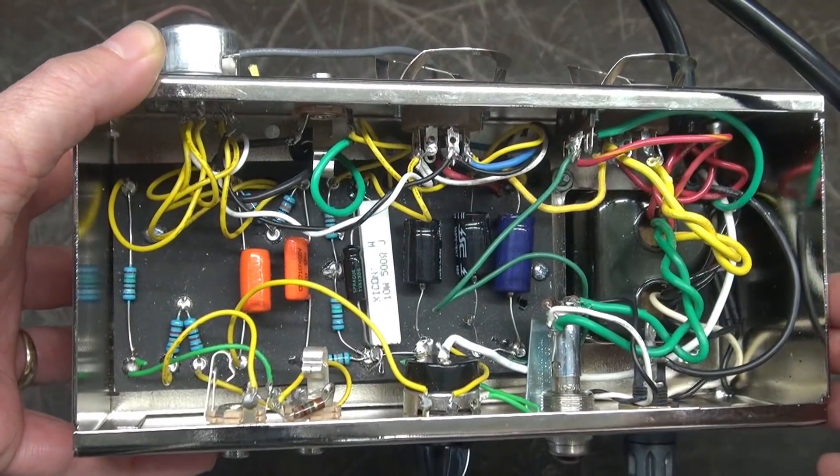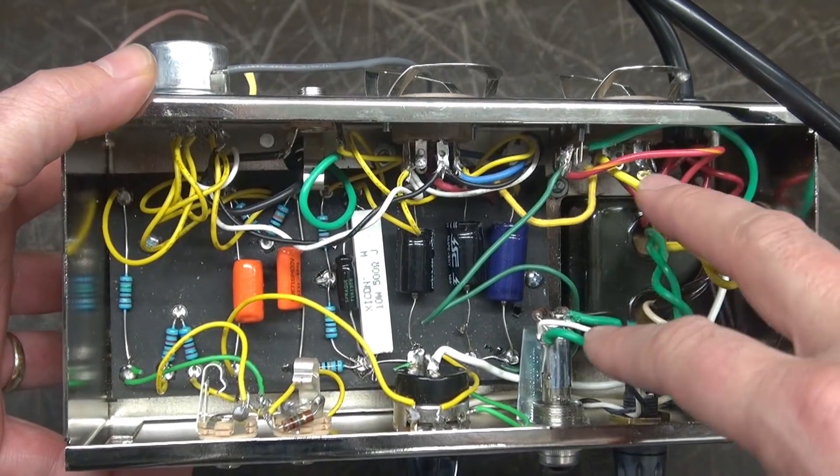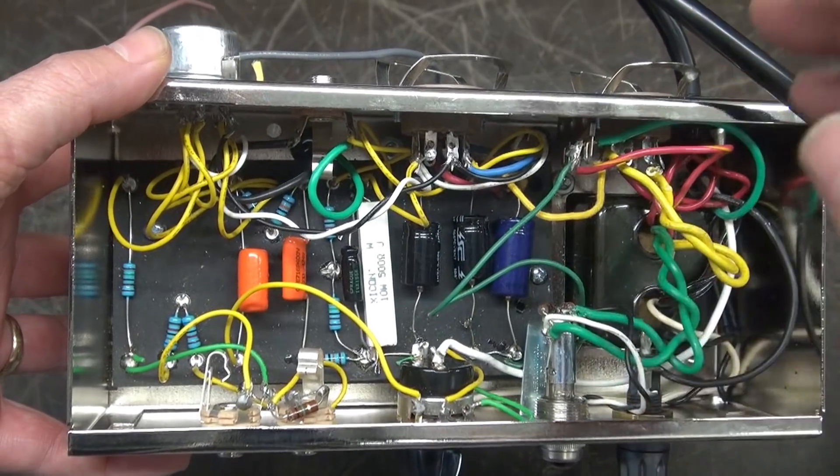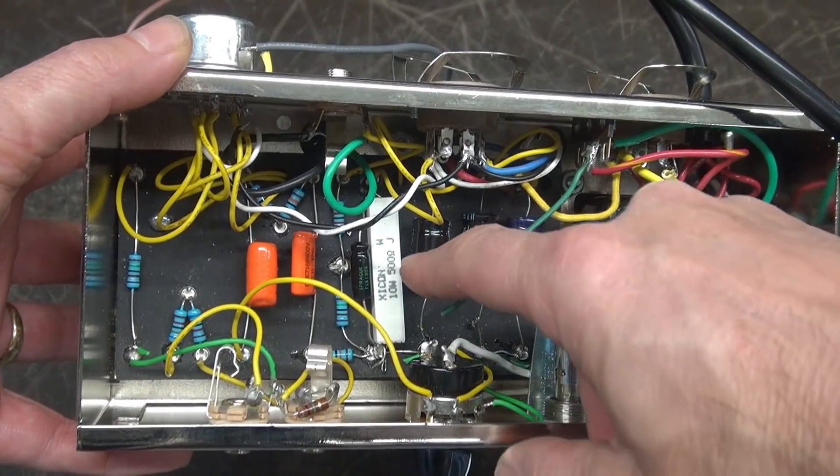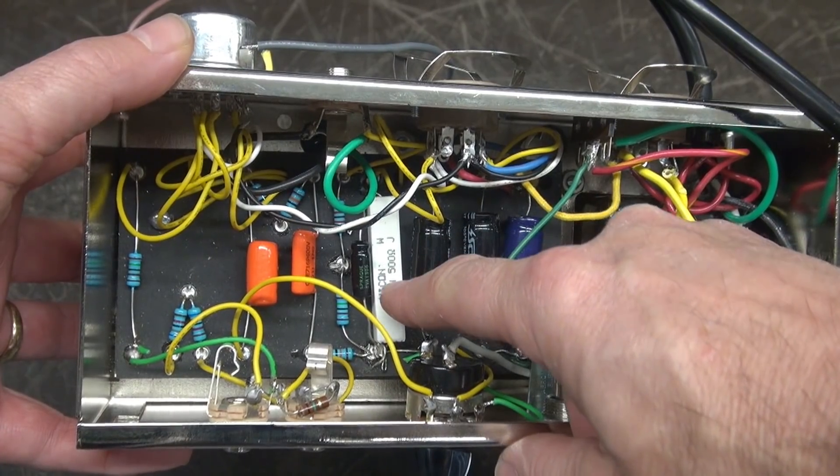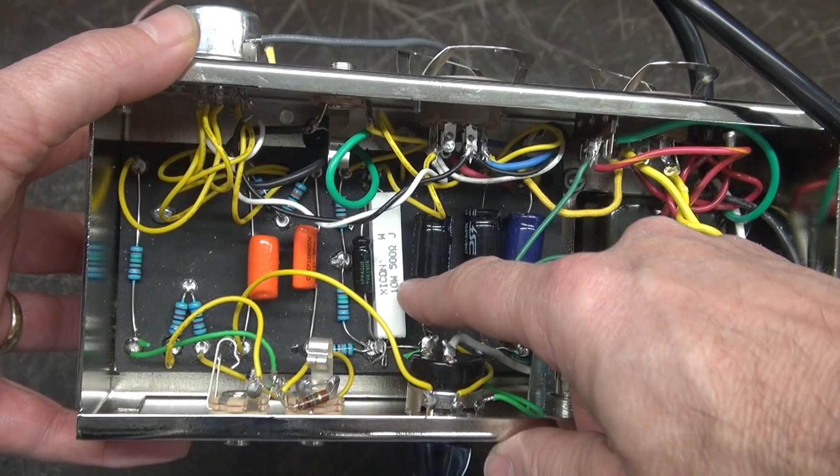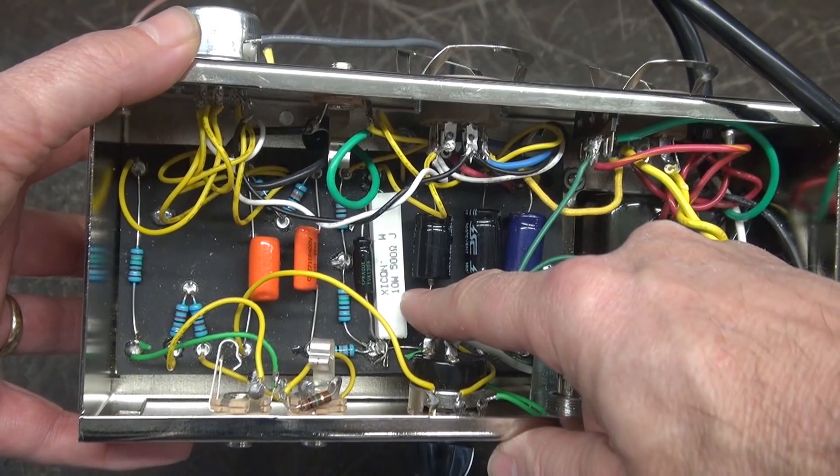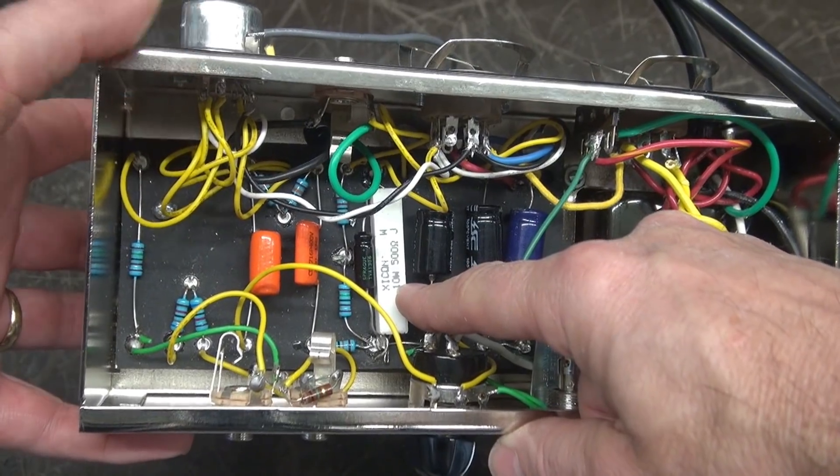Here she is, a little 5F1 kit form Champ. You can see we got a lot of wires here, a lot of things going on. Now the last one that I worked on had the stock 470 ohm resistor here that was baked. This one has a 500 ohm 10 watt resistor. It looks fine, it's big, but it's not baked.